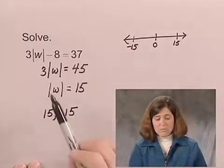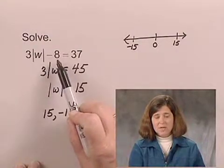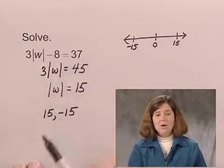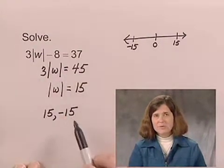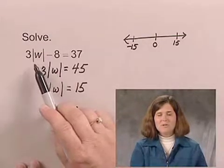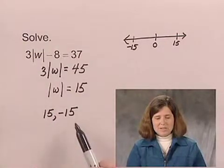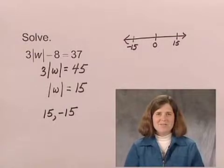To check, we would find that 3 times the absolute value of 15 is 45, and 45 minus 8 is 37. Also, 3 times the absolute value of negative 15 will also be 45, and 45 minus 8 will be 37. So this equation has two solutions, 15 and negative 15.